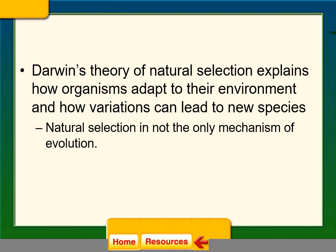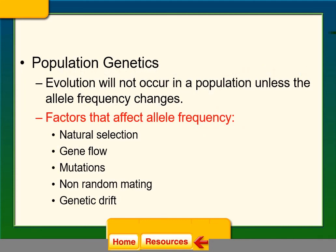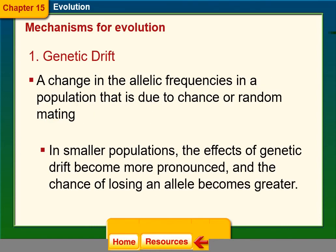Natural selection is not only the mechanism of evolution. In population genetics, we look at allele frequency. Evolution will not occur in a population unless the allele frequency changes. Different factors that drive this include natural selection, gene flow, mutations, non-random mating, and genetic drift.